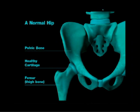This right here is a hip joint — you're looking at the pelvis here, the spine going up, and this right here is the hip joint. You can see the healthy cartilage in the ball and socket joint.